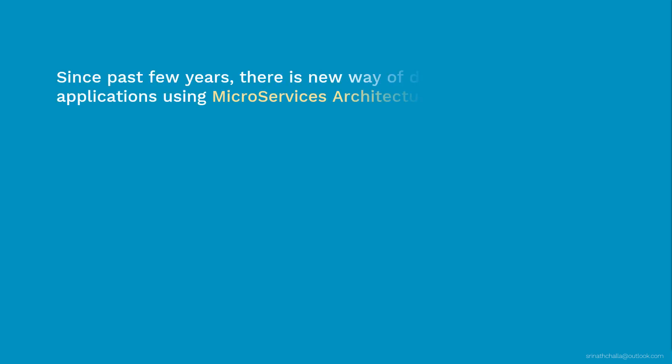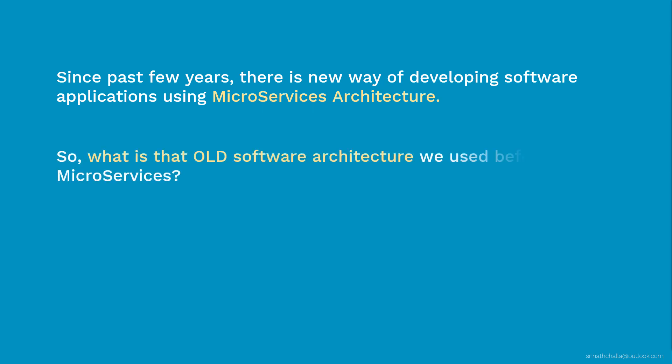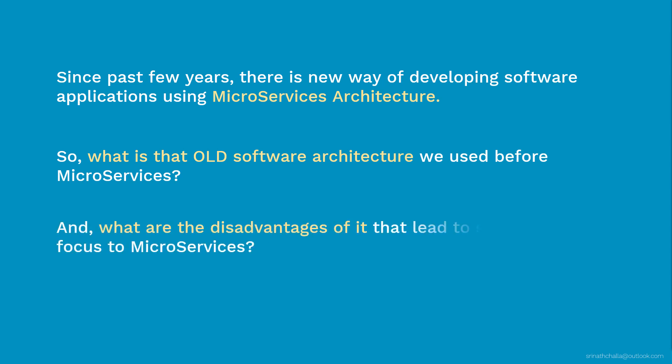Since past few years there is a new way of developing software apps using microservices architecture. That's when all the buzz around containers and container orchestration has increased. But we have been developing and using these large software apps even before most of us were born. So what is that old software architecture we used before microservices, and what are the disadvantages of it that led to shift our focus to microservices?